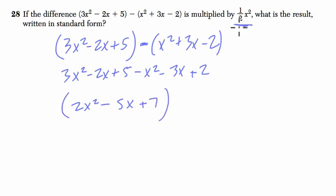Multiply this by 1 half x squared. So this is 1 half times 2 is 1, x squared times x squared is x to the 4th, minus 5 halves x to the 3rd. x times x squared is x to the 3rd, and 5 times 1 half is 5 halves, plus 7 halves x squared for the same reason.